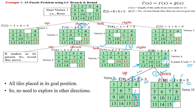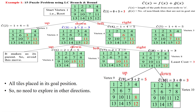Once all tiles are placed in the goal position, there is no need to explore further. We have found our goal state — all tiles are correctly placed. This is the solution obtained with least cost using the branch and bound method. The least cost path has cost three, so we can kill all other paths that have cost greater than three — all remaining paths have cost five and are pruned.